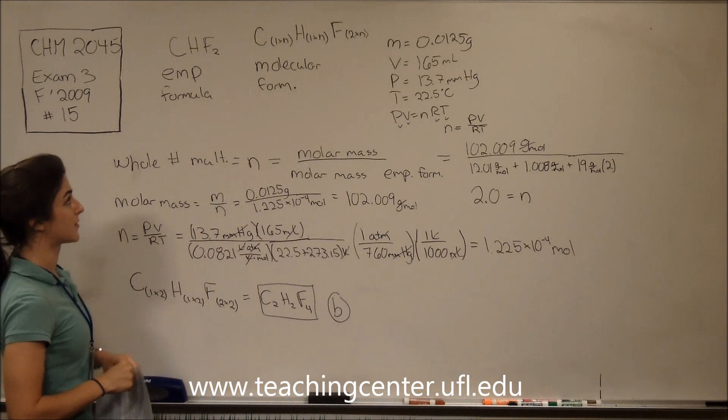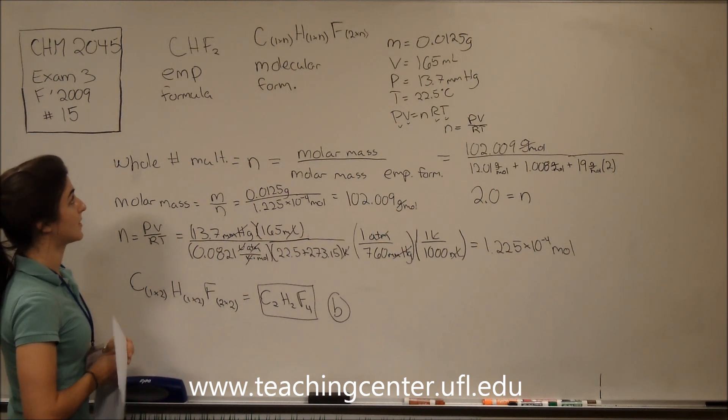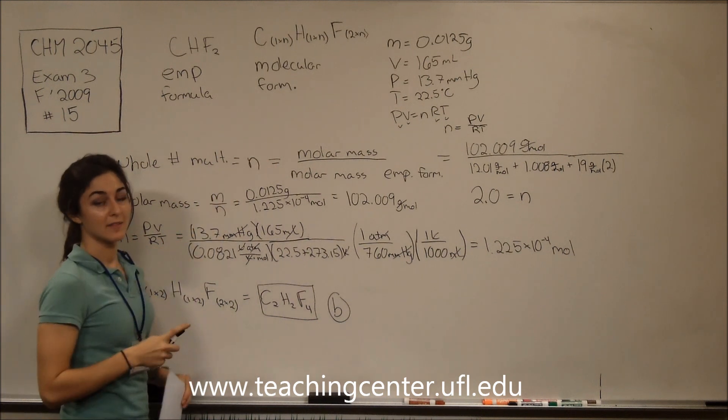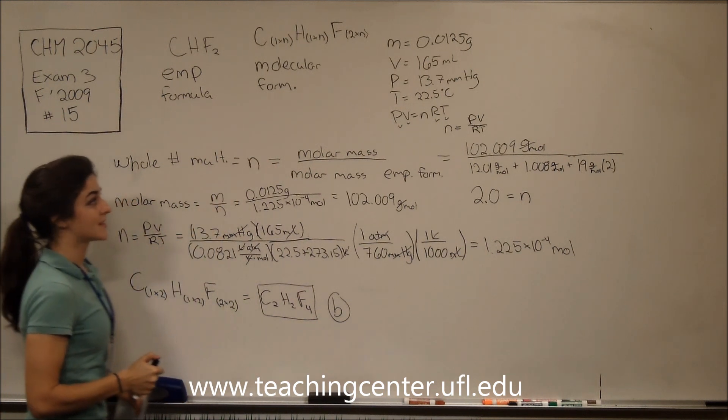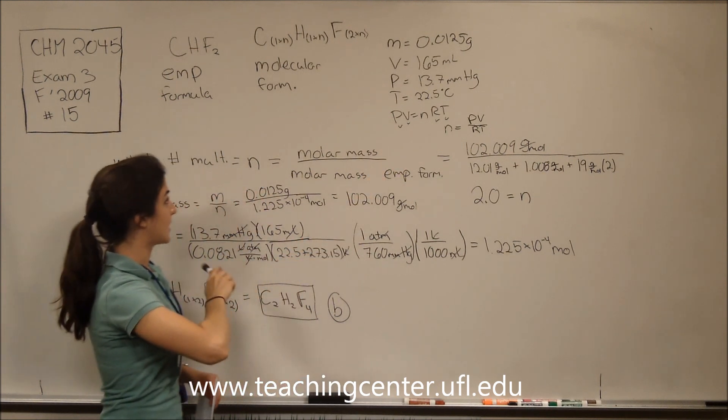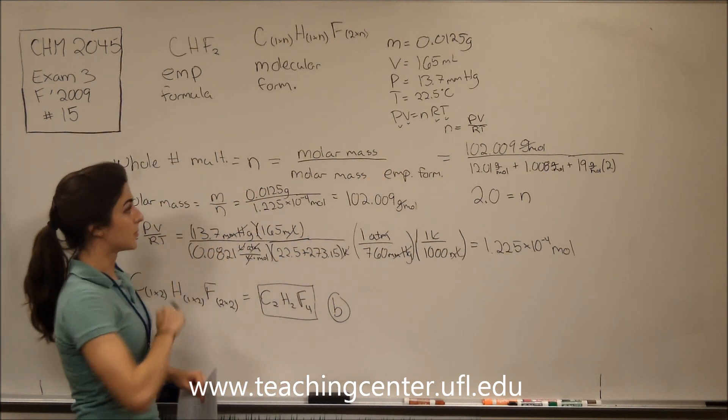So the thing you should walk away from this problem knowing is how to figure out molecular formula from the empirical formula and using some of your knowledge of PV=nRT and how to find the whole number multiple.